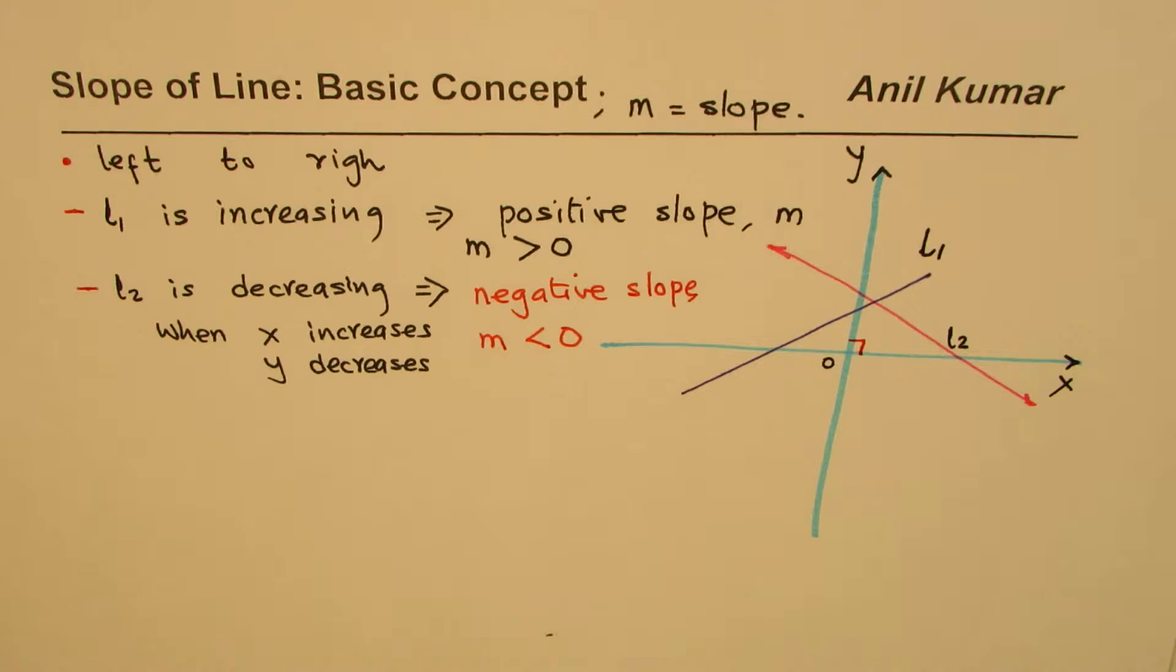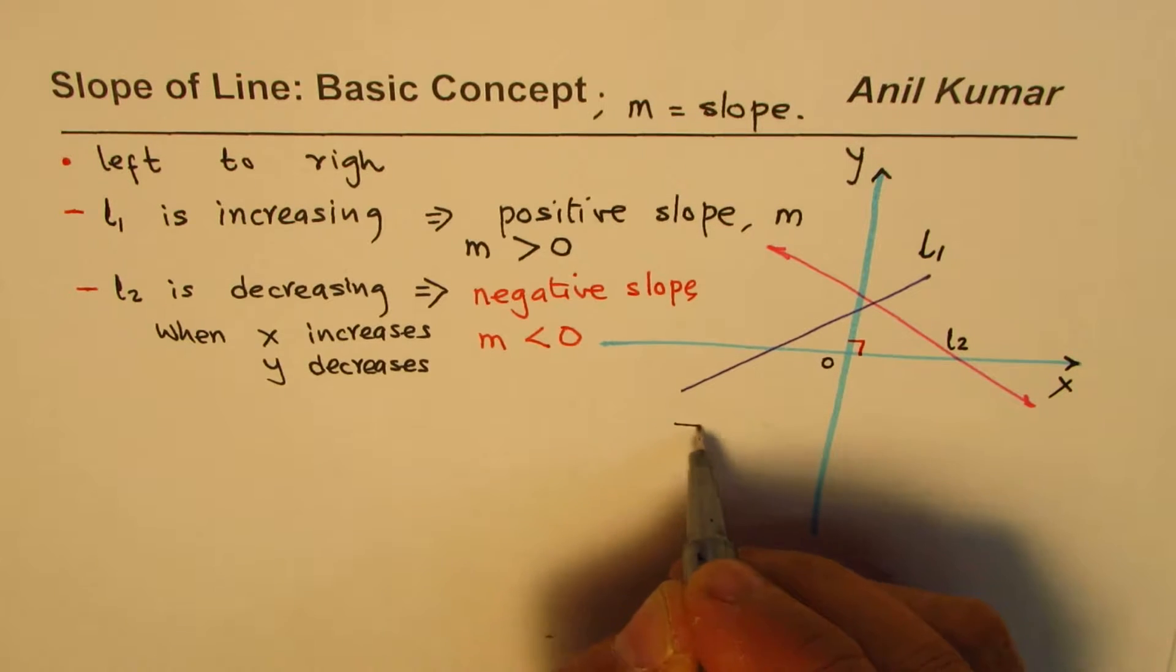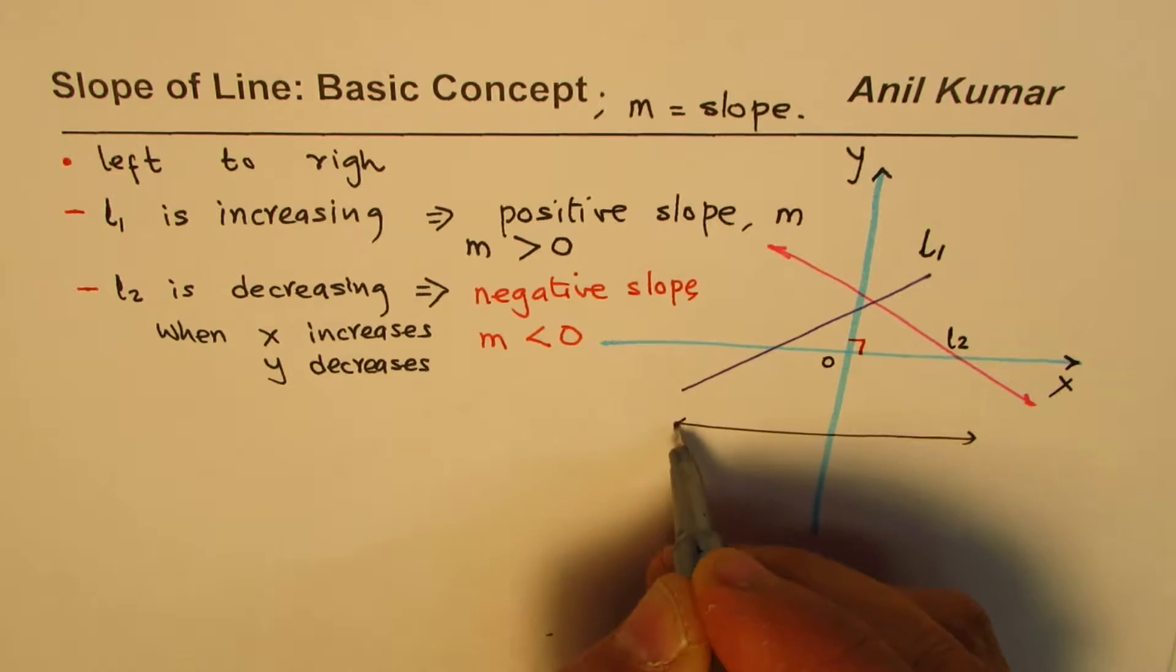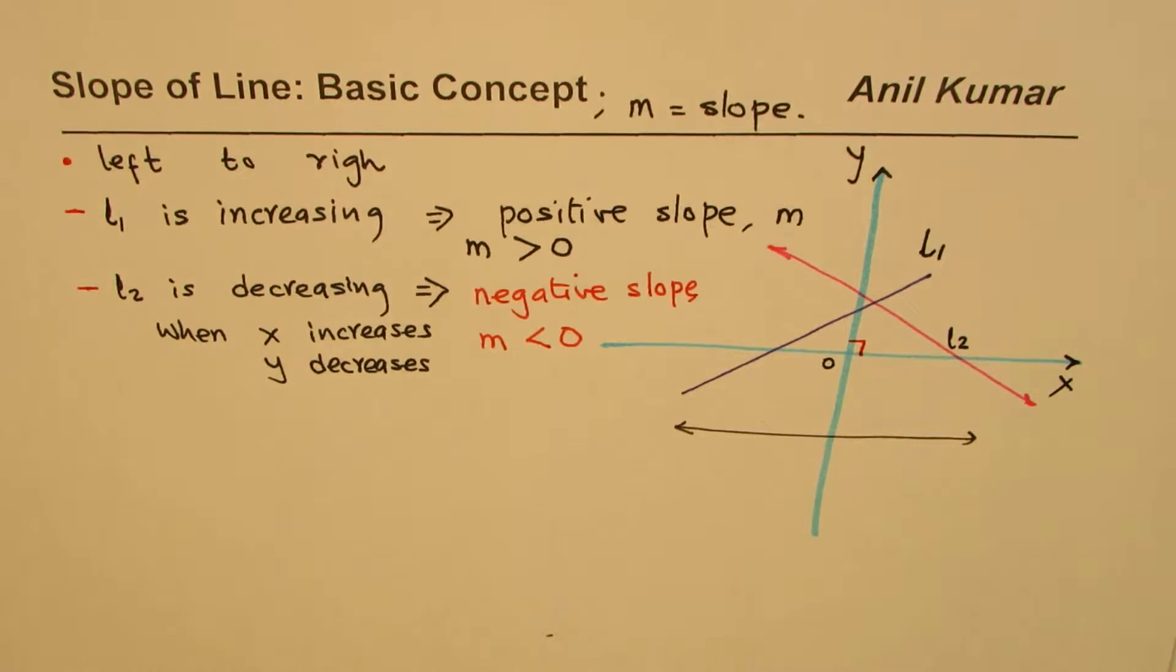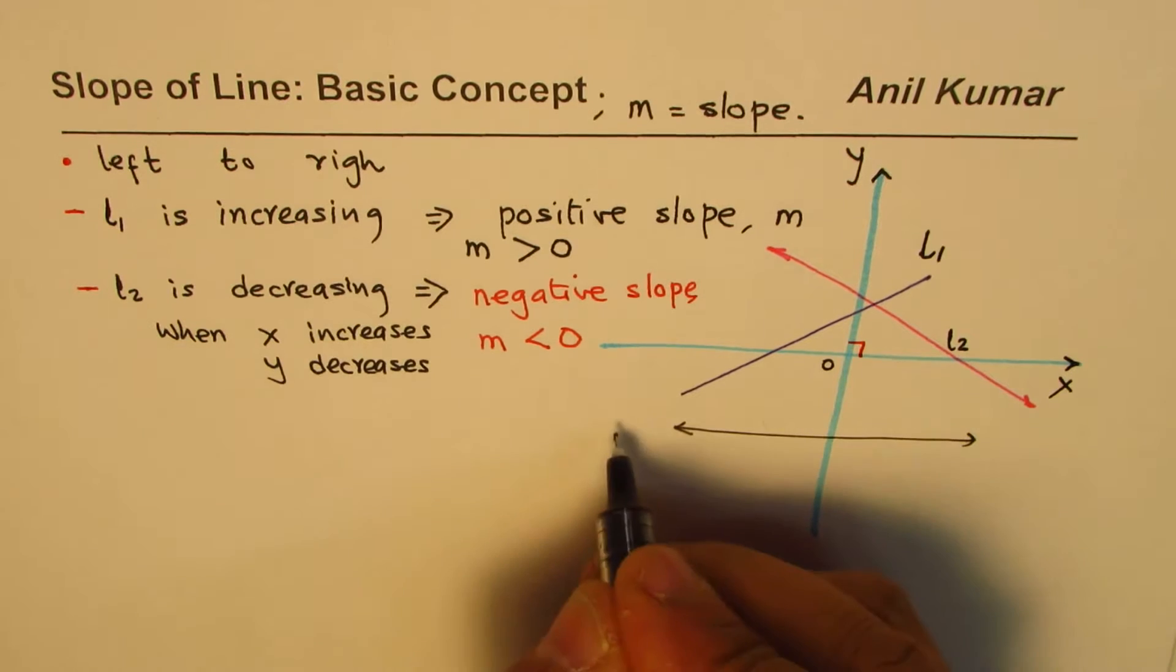Now the question is, can the lines have 0 slope? Why not? So what we will do here is draw another line, kind of like this, which is horizontal line. This time, we have sketched a horizontal line. We are saying we have line 3.